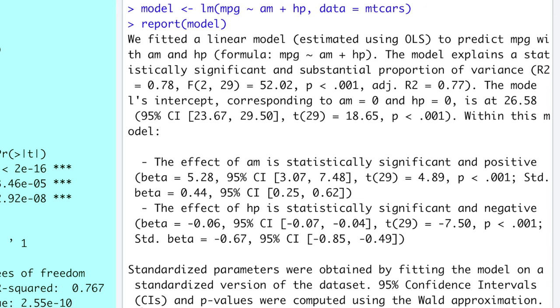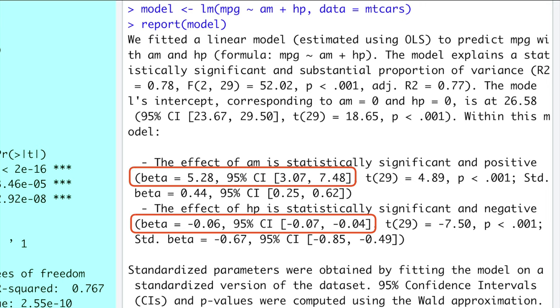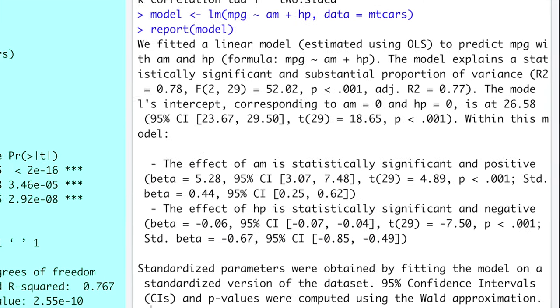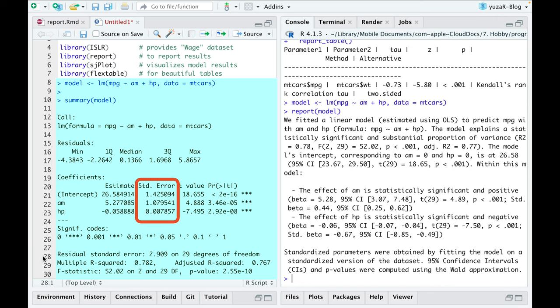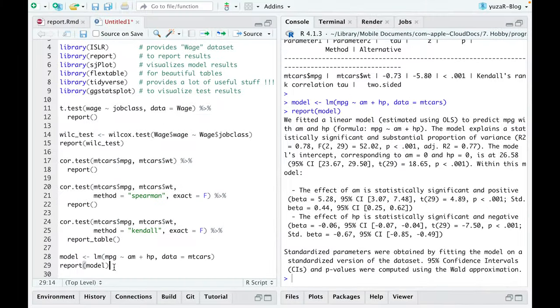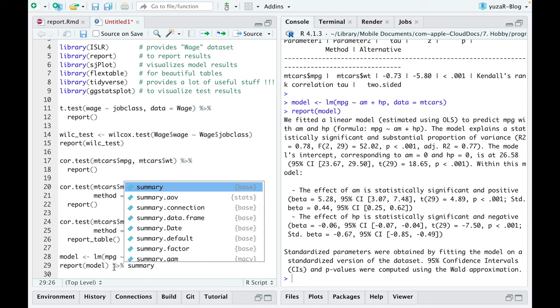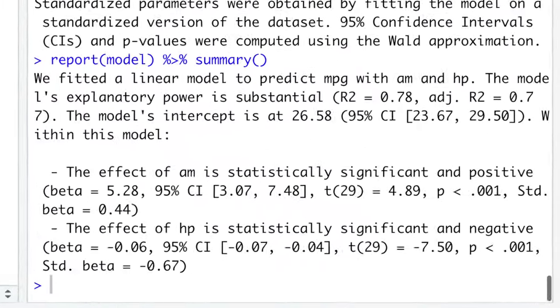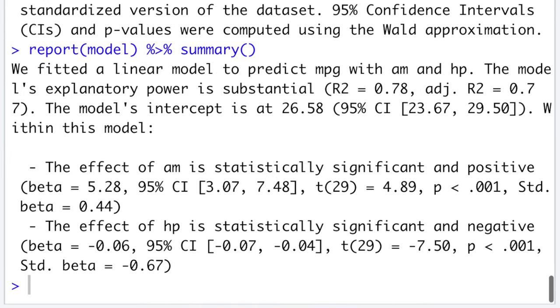And finally, report function describes parameters AM and HP by providing the slope with useful 95% confidence intervals, while the summary gives you not really useful standard error of the mean. In fact, if used for models, the report function gives you more than you might want to use. That is why you can apply a summary command on top of the report command in order to report only essential information.